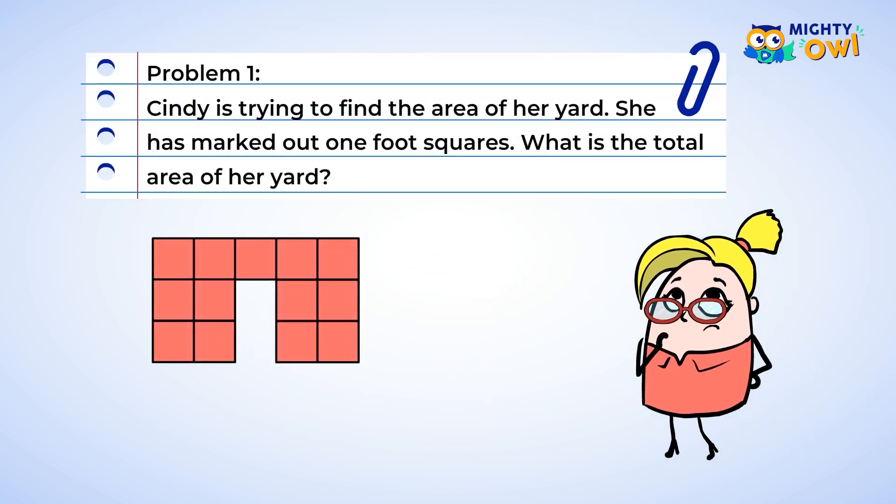Now, Cindy is trying to find the area of her yard. And she's marked out some one foot squares. The question is, what is the total area of her yard? Okay. There are 13 squares. And that means that it has an area of 13 square feet.